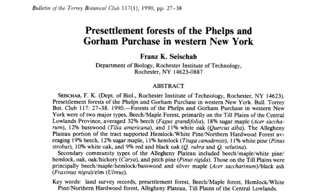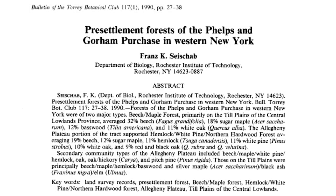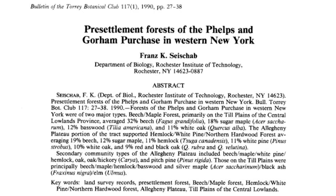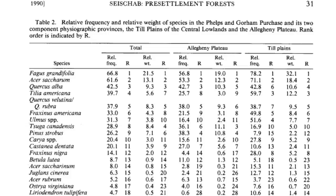Yet another study, focusing on pre-settlement forests in a portion of western New York, showed that American chestnut was outnumbered by American beech, sugar maple, white oak, black oak, and other trees.